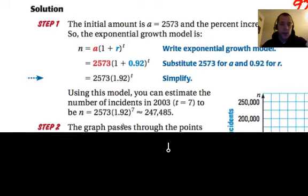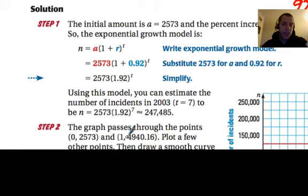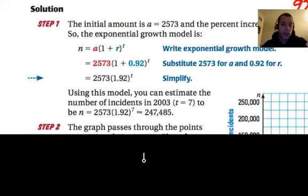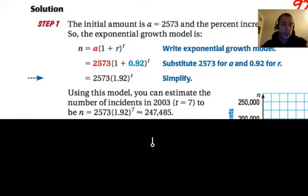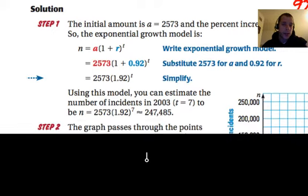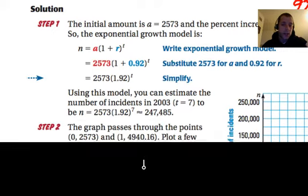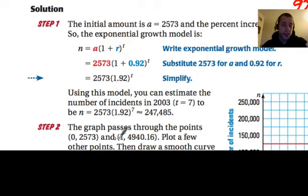For number two, we can actually figure out in seven years how many incidences there are going to be because we're looking at 2003. So it's seven years past 1996. By substitution for your t value, and raising 1.92 to the seventh power and multiplying that by 2,573, you get 247,485 incidences.